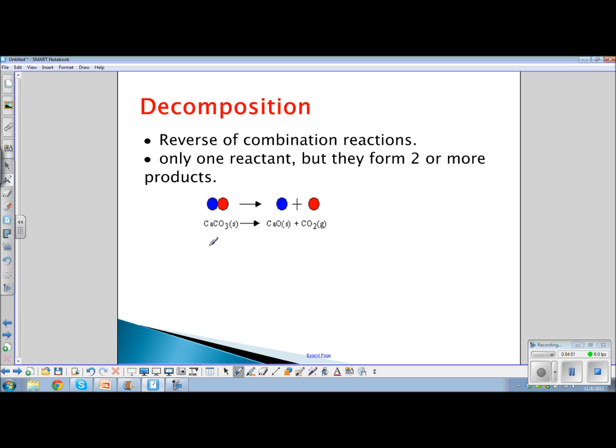So the next type of reaction is a decomposition reaction. And decomposition reaction is exactly the reverse of a combination reaction. Here we start out with only one reactant. And we can say it's AB yields A plus B. And we can end up with two products. So one reactant yields two products, represented here by the little circles.